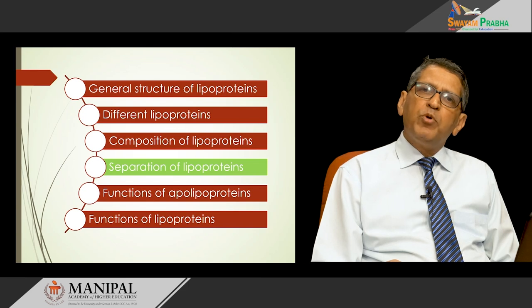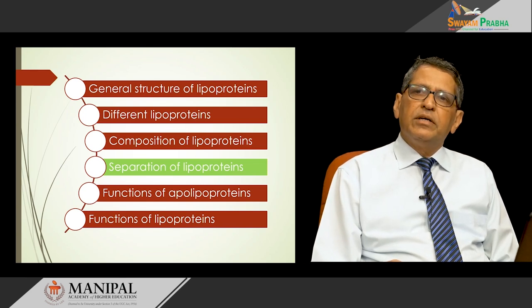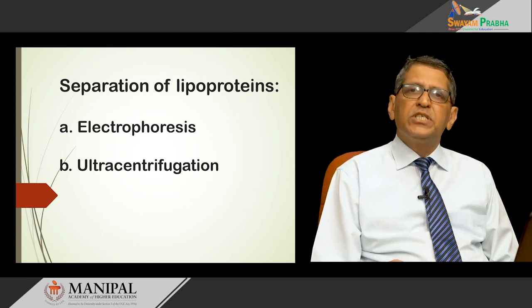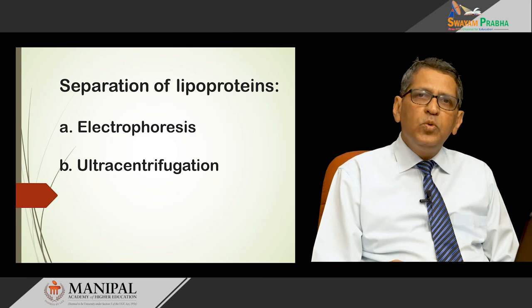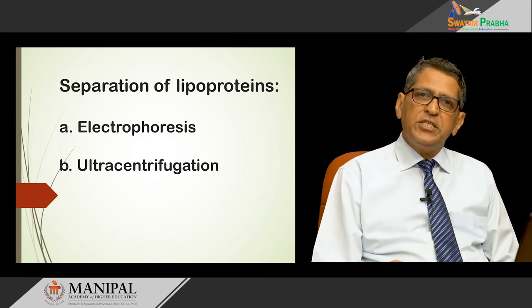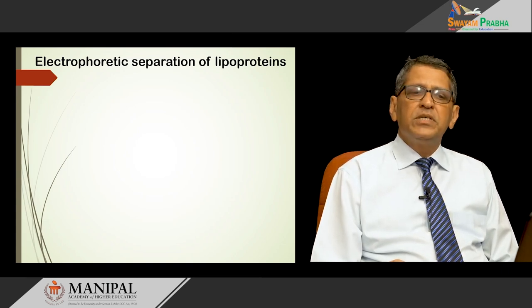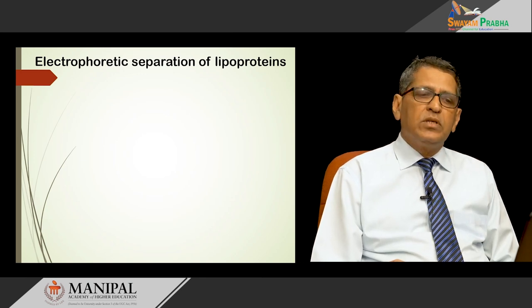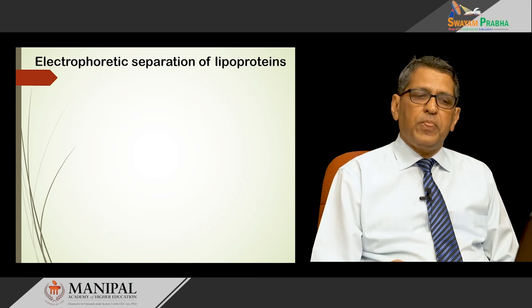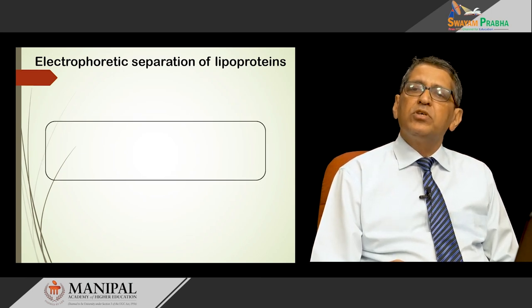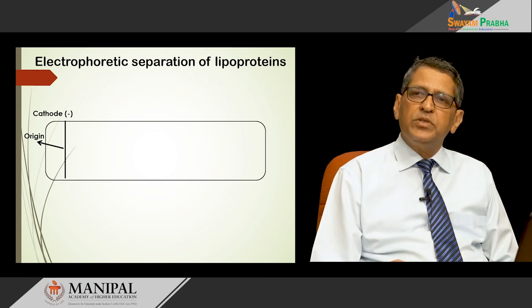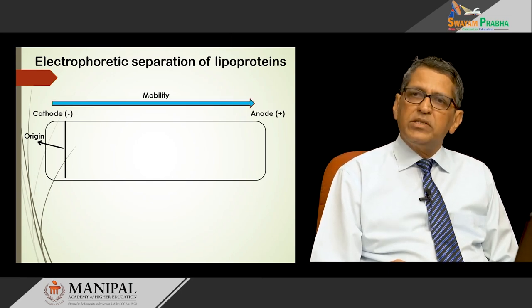There are two ways by which lipoproteins can be separated: through electrophoresis and by ultracentrifugation. In separation by electrophoresis, the separation depends upon the charge-to-mass ratio. The separation is carried out on agarose gel. A sample of serum is placed at the cathode, electricity is passed, and the mobility is from cathode to anode.